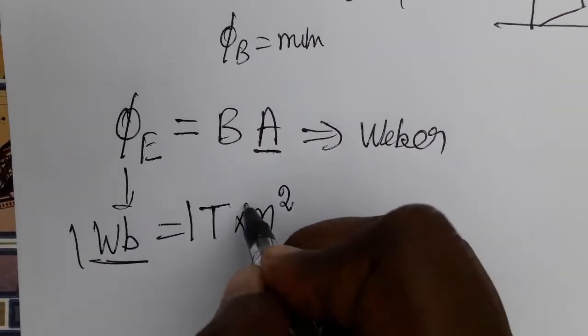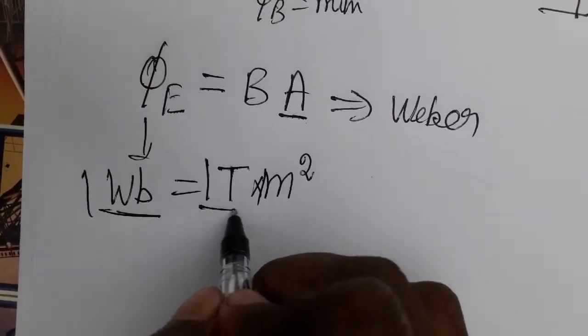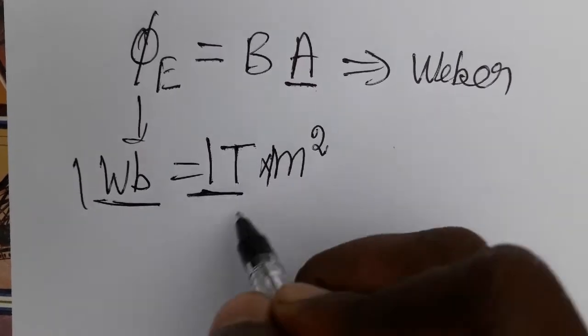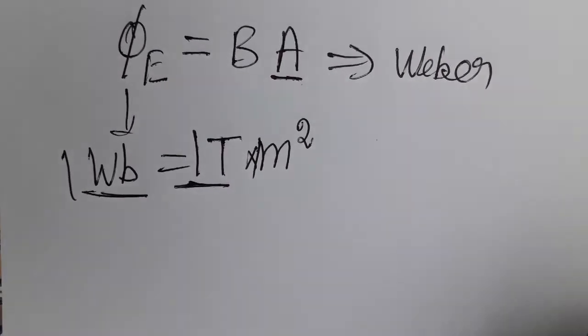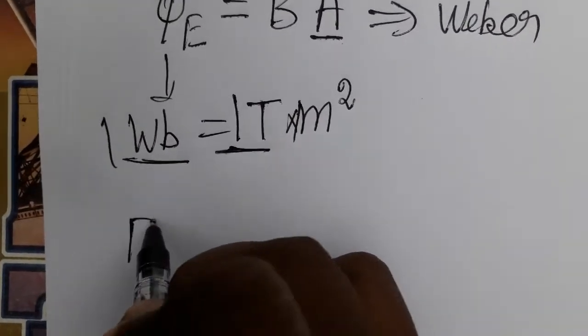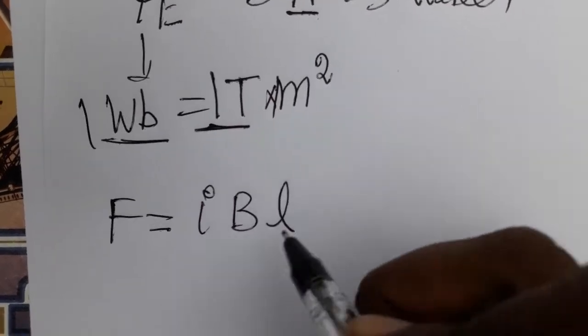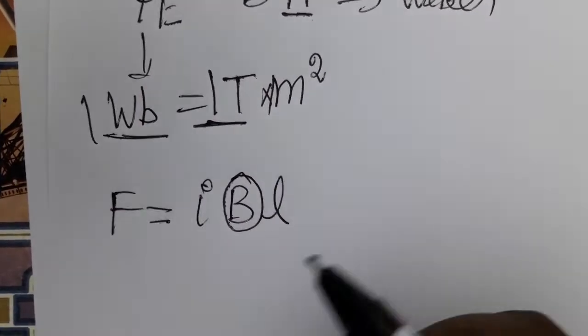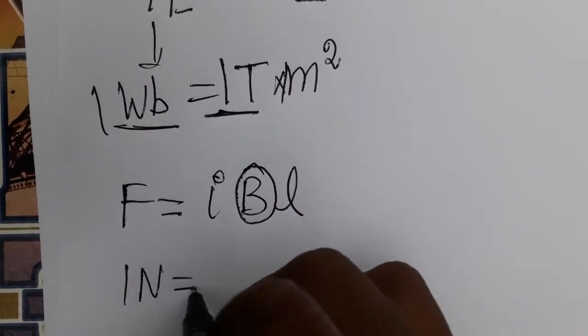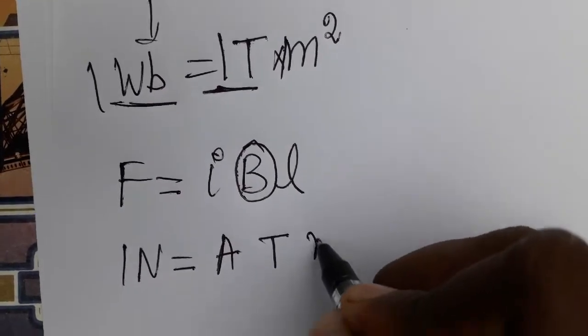To derive the SI unit, we need to convert tesla using another relation. According to the force equation F = BIL, force is newton, current is ampere, magnetic field is tesla, and length is meter.